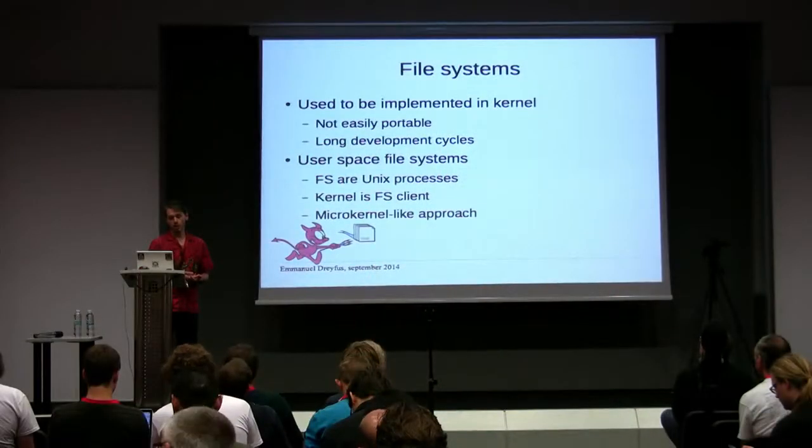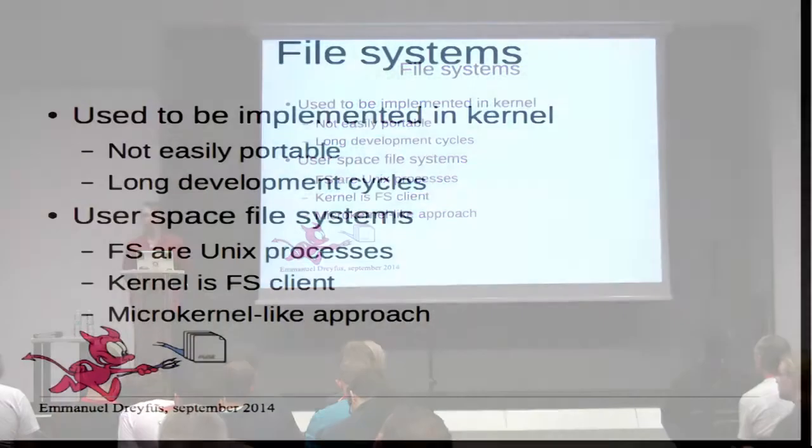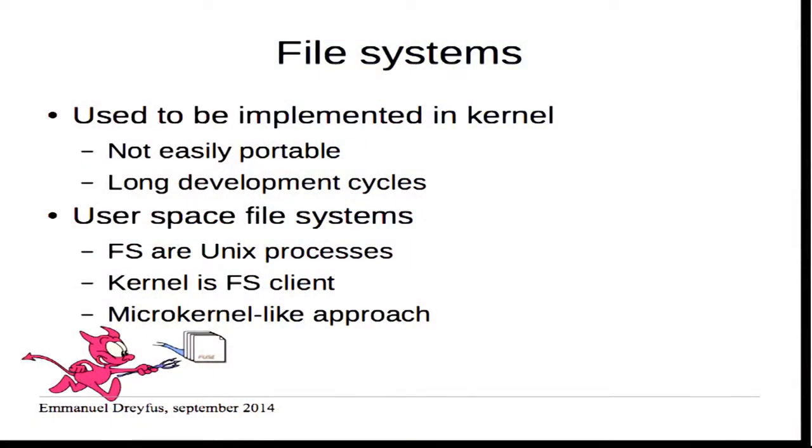For a long time, file systems used to be implemented in the kernel, which means they were not portable at all and development cycles were quite long because developing the kernel is not easy. Recently we have seen file systems in user space appearing, where the file system is a unique process and the kernel is a client for that process, with message exchanges between them — a bit like a macro-kernel architecture.